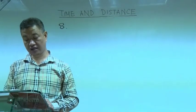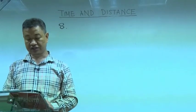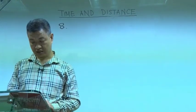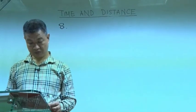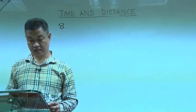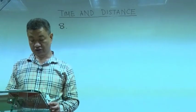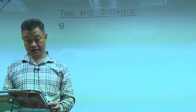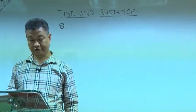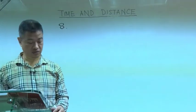Let's work this out. The number of gaps between 41 posts is 40. The distance between the posts is 50 meters. So the total distance covered in one minute is 40 into 50 meters.